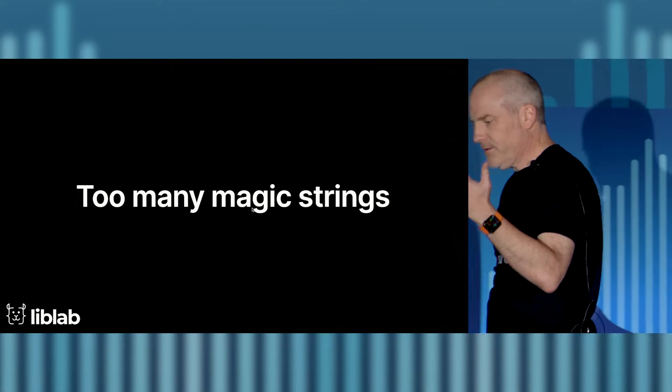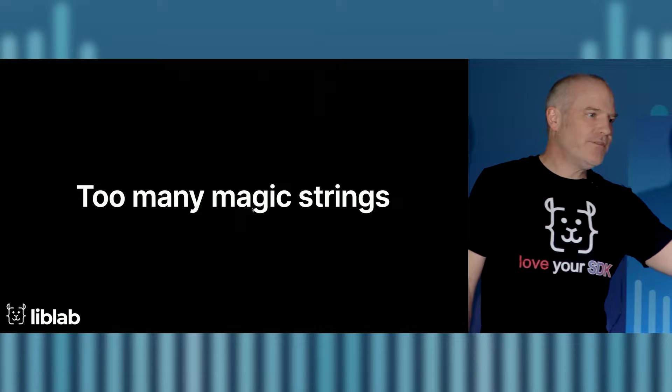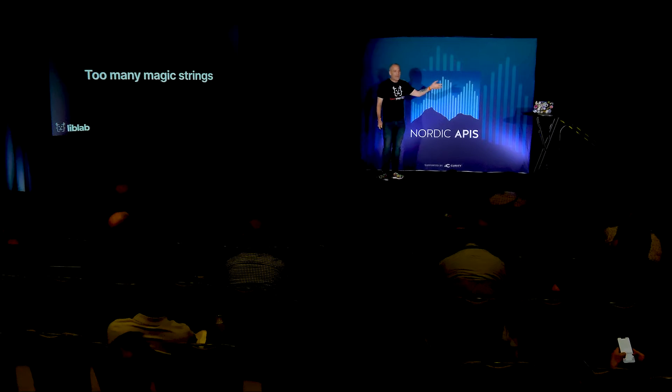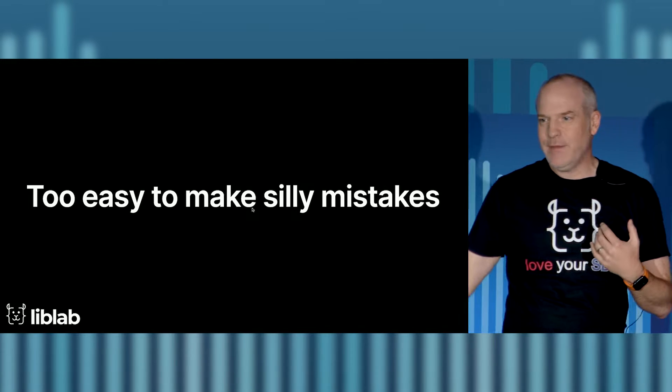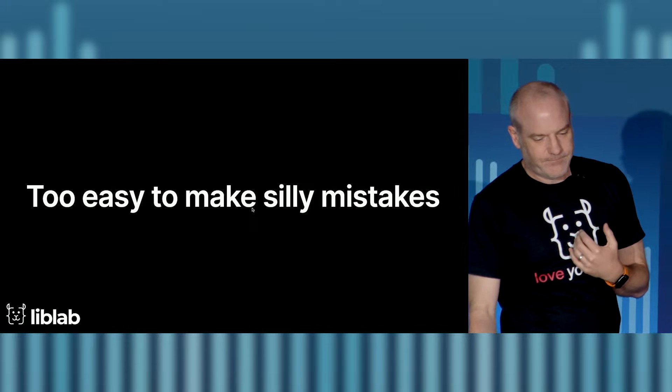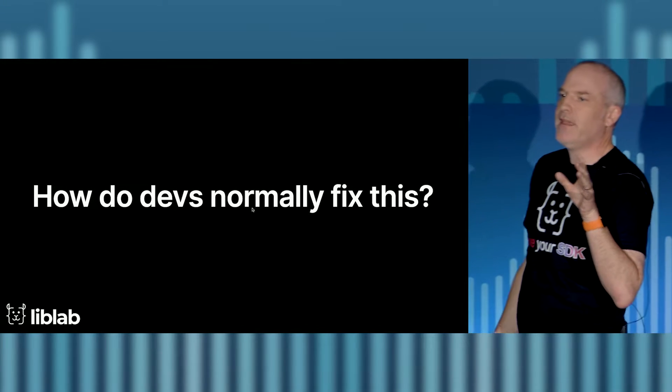Too many magic strings. I have my endpoints defined as slash user, slash token. There's JSON I have to deal with, magic strings for username and email. I can make spelling mistakes. It's too easy to make silly mistakes, and every time I do, it takes iterations to get it right. So how do we normally fix this? We fix it with a layer of abstraction. Pretty much every computer science problem can be solved with a layer of abstraction.